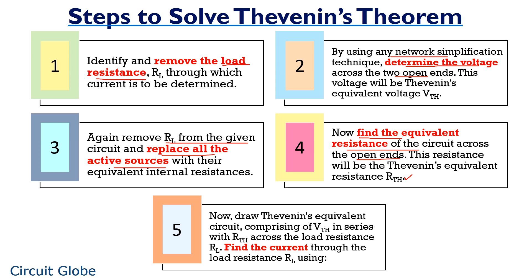Now by the help of values Vth and Rth, you need to draw Thevenin's equivalent circuit and further find the current flowing through the load resistance using the formula: I is equal to Vth upon Rth plus RL, where Vth is Thevenin's voltage, Rth is Thevenin's resistance, and RL is the load resistance.